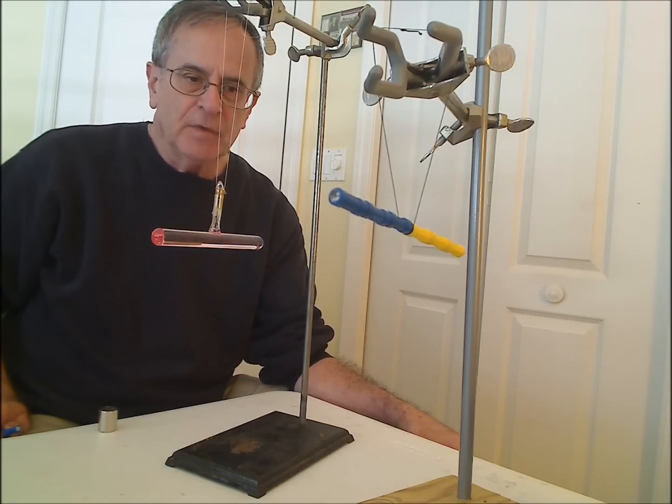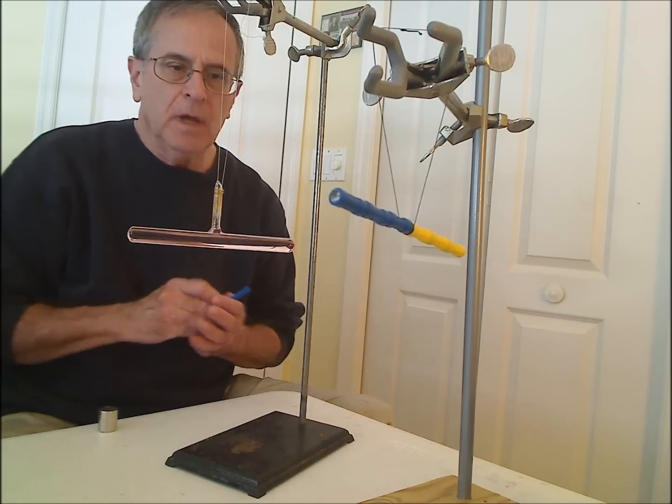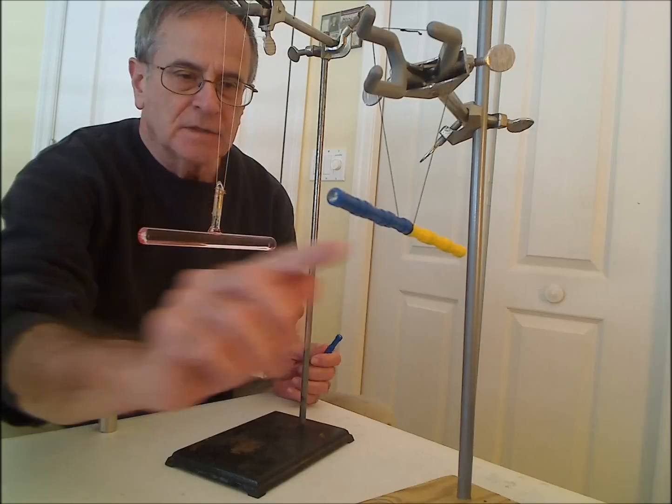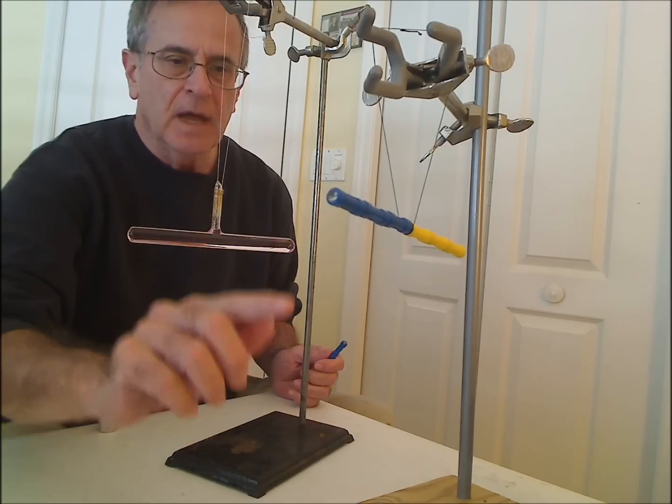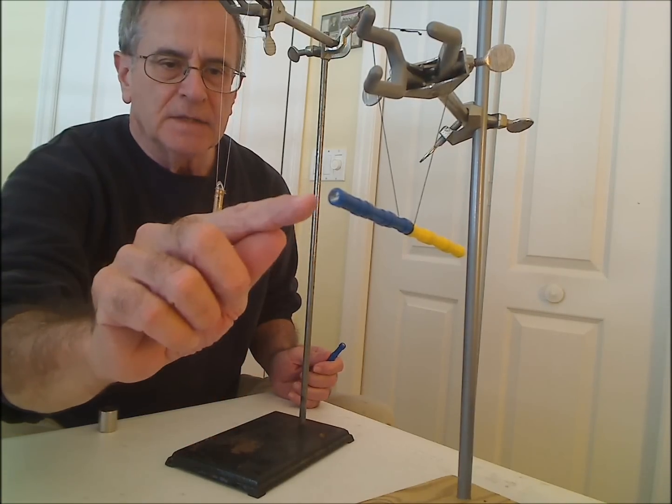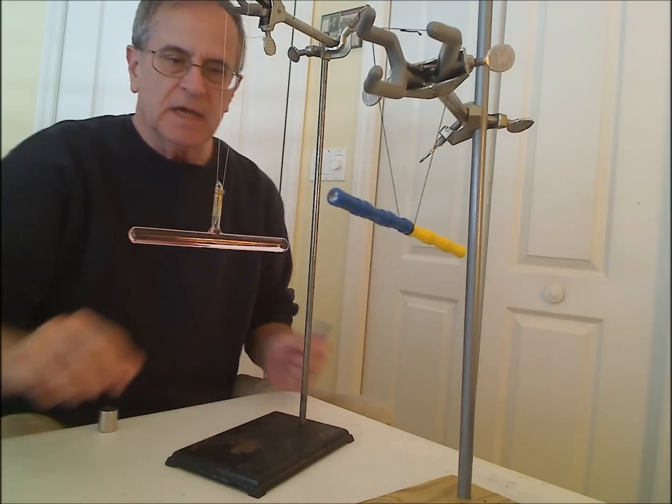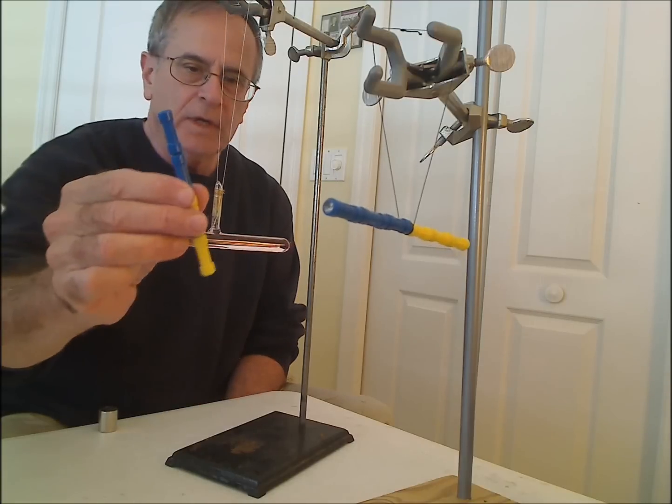I'm going to use as my example for the ferromagnetic material this permanent magnet. It's actually a series of six permanent magnets aligned together. The blue side is the north seeking pole and the yellow side is the south seeking pole, and I have another one here.